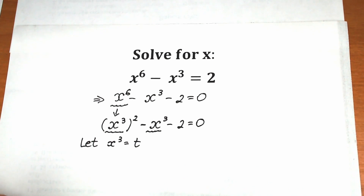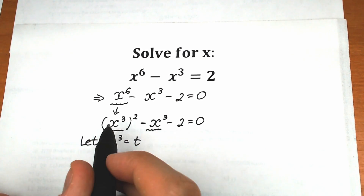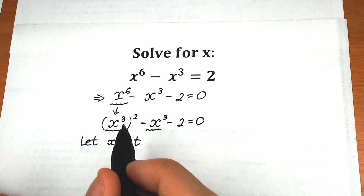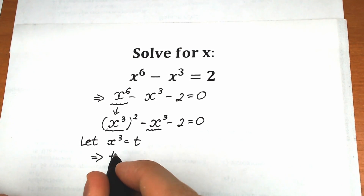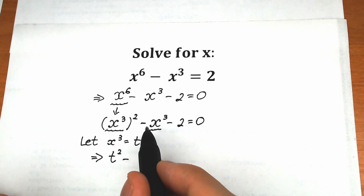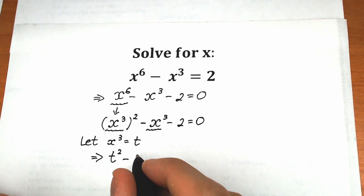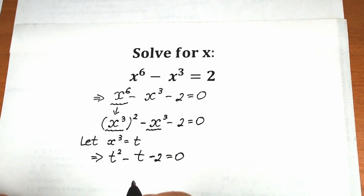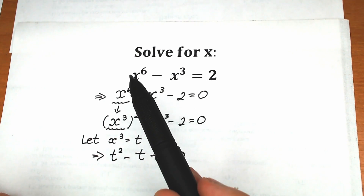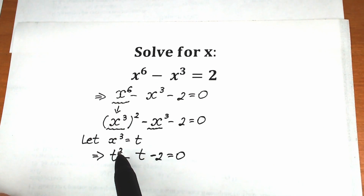So instead of x cubed let's plug in t. We have t squared, and instead of the second x cubed we have t. So we get t squared minus t minus 2 equals 0. We started with a sixth-degree equation and now we have a quadratic equation. Let's solve it.